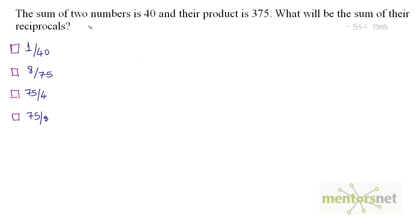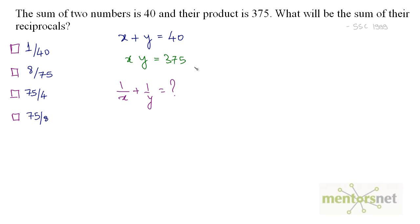Let us solve the final question. The sum of two numbers is 40 and their product is 375. What will be the sum of their reciprocals? We have been given x plus y equals 40 and x times y equals 375. What has been asked is 1 by x plus 1 by y, which equals y plus x divided by x times y.